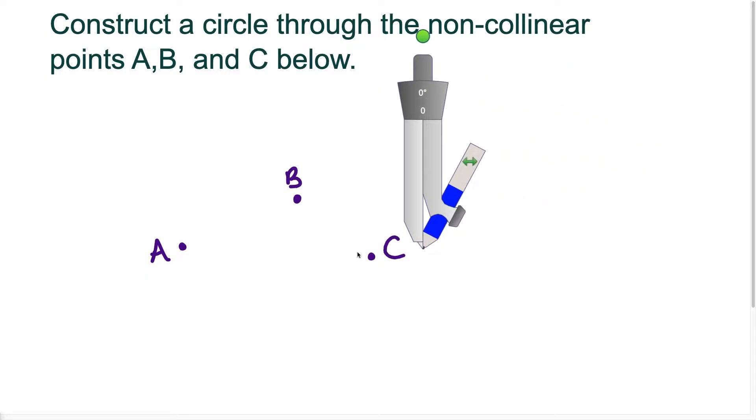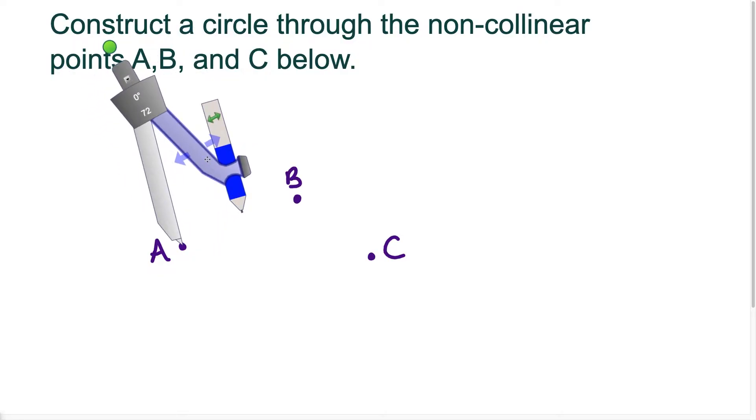So I have three points here that are scattered like this. And if you have any three non-collinear points, you could always find a circle that hits through all three of those points.